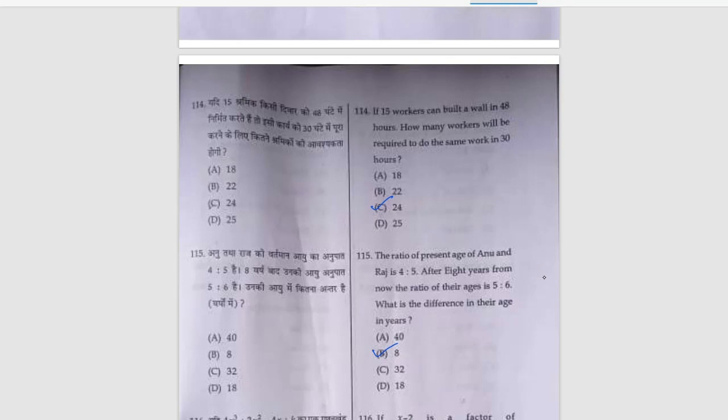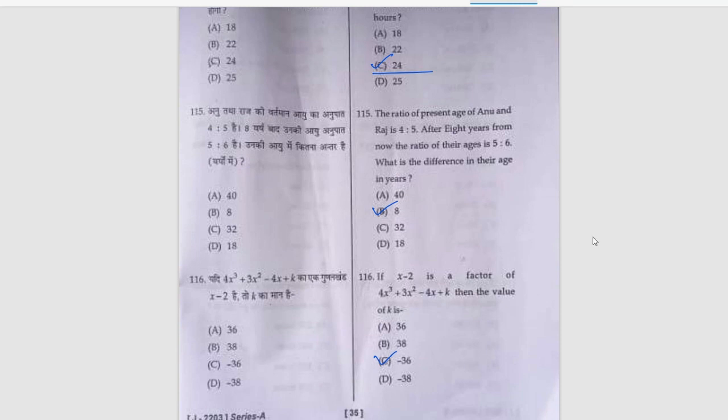If 15 workers can build a wall in 48 hours, how many workers will be required to do the same work in 30 hours? That is 24 workers. Ratio of present age of Anu and Raj is 4 ratio 5. After 8 years from now, the ratio of their ages is 5 ratio 6, but the difference in their age is 8. If x minus 2 is a factor of this, then you will have option C, that is minus 36.